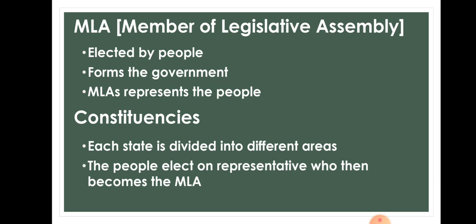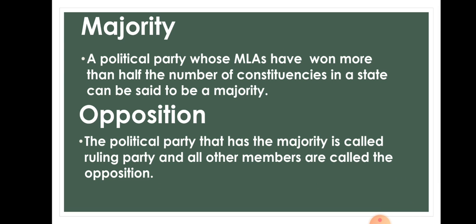MLA, or Member of Legislative Assembly, are those who are elected by the people. They form the government and represent the people. Each state is divided into different areas called constituencies. The people elect one representative who then becomes the MLA for that particular constituency. A political party whose MLAs have won more than half the number of constituencies in a state can be said to have a majority.